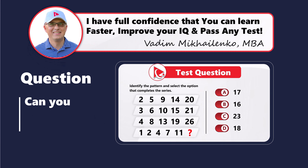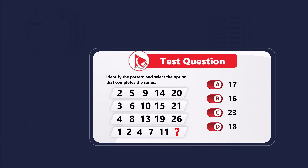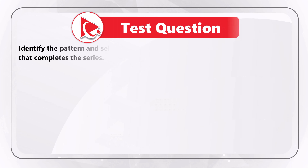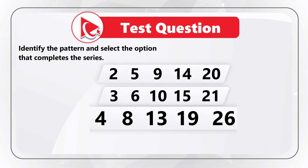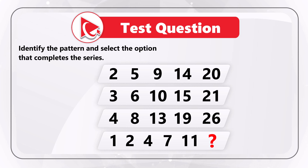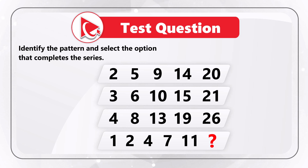This is one of my favorite questions because it tests your analytical skills as well as your ability to identify sequences. You are presented with a series of numbers and need to identify the pattern and select the option that completes the series. The numbers are: Row 1: 2, 5, 9, 14, 20. Row 2: 3, 6, 10, 15, 21. Row 3: 4, 8, 13, 19, 26. Row 4: 1, 2, 4, 7, 11, and then the missing number. Choose A: 17, Choice B: 16, Choice C: 23, and Choice D: 18.